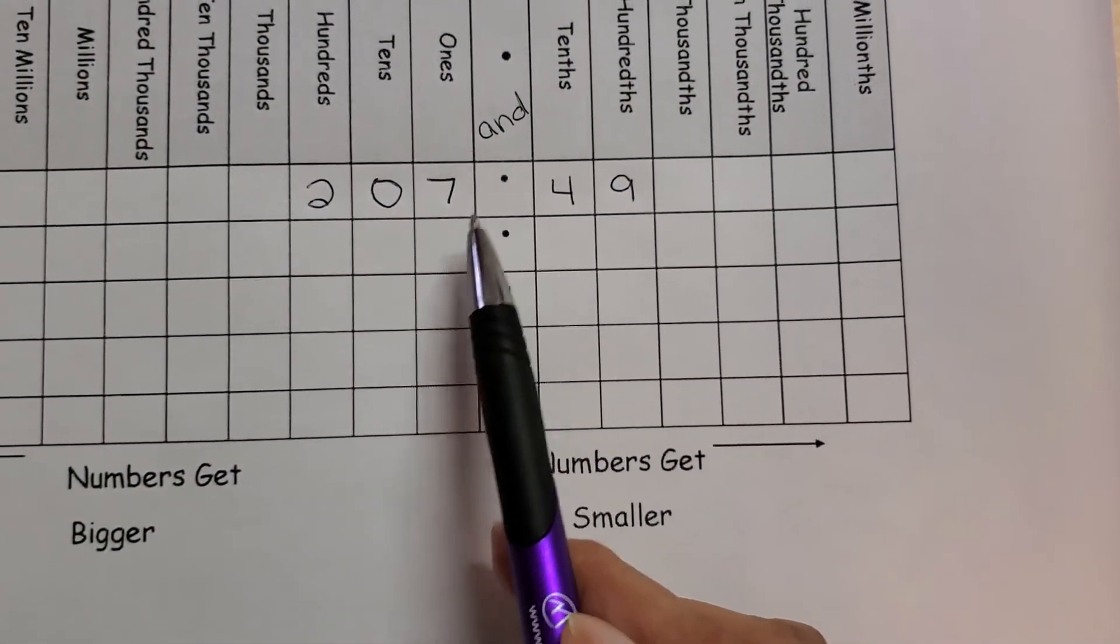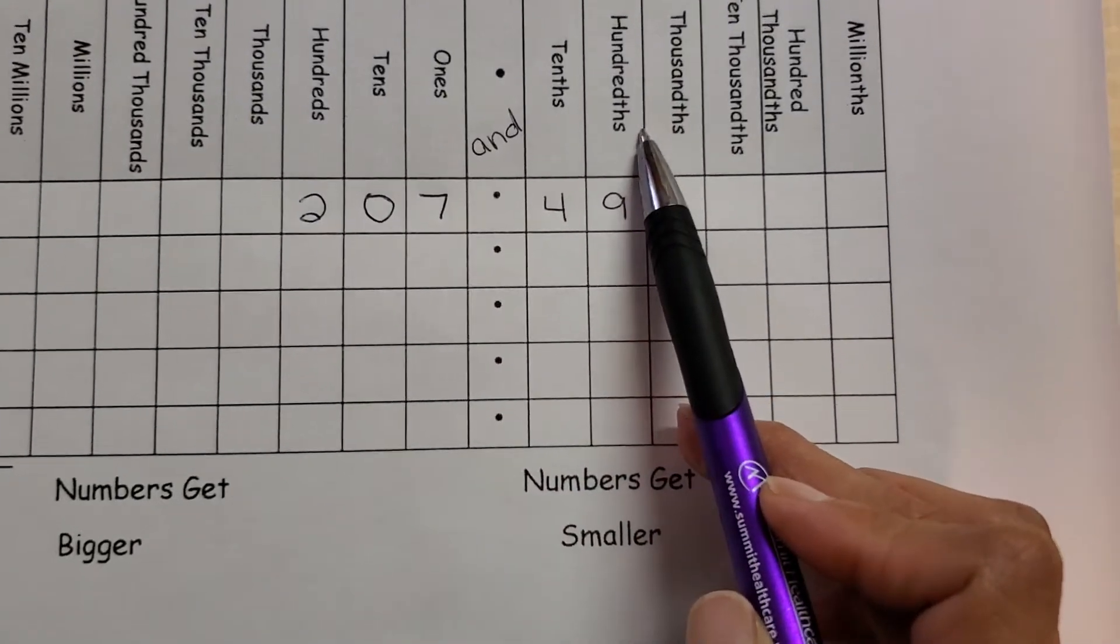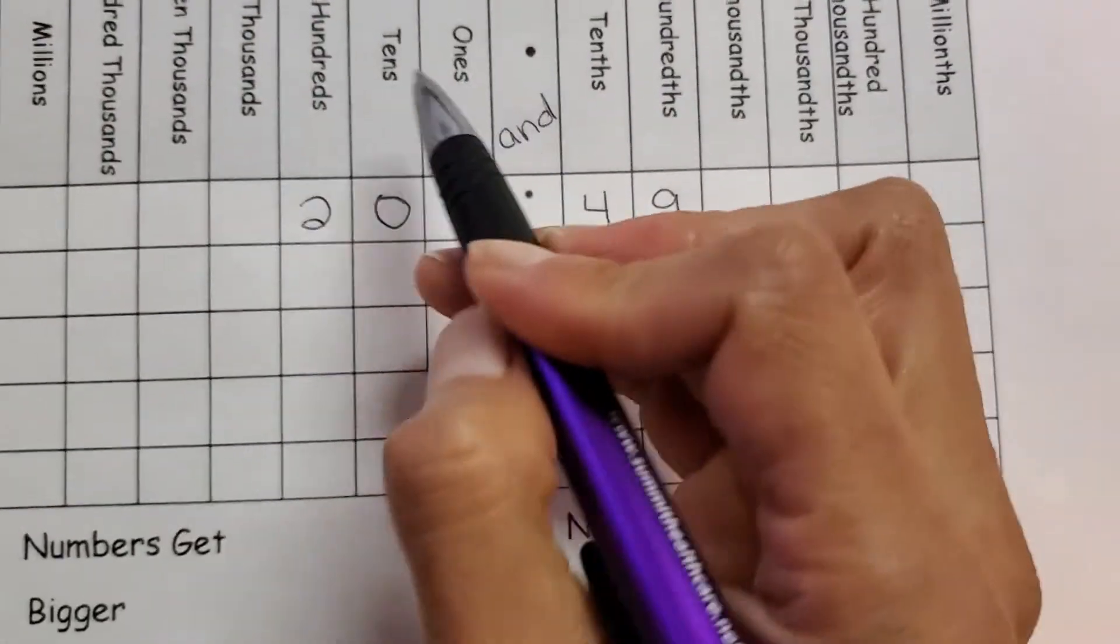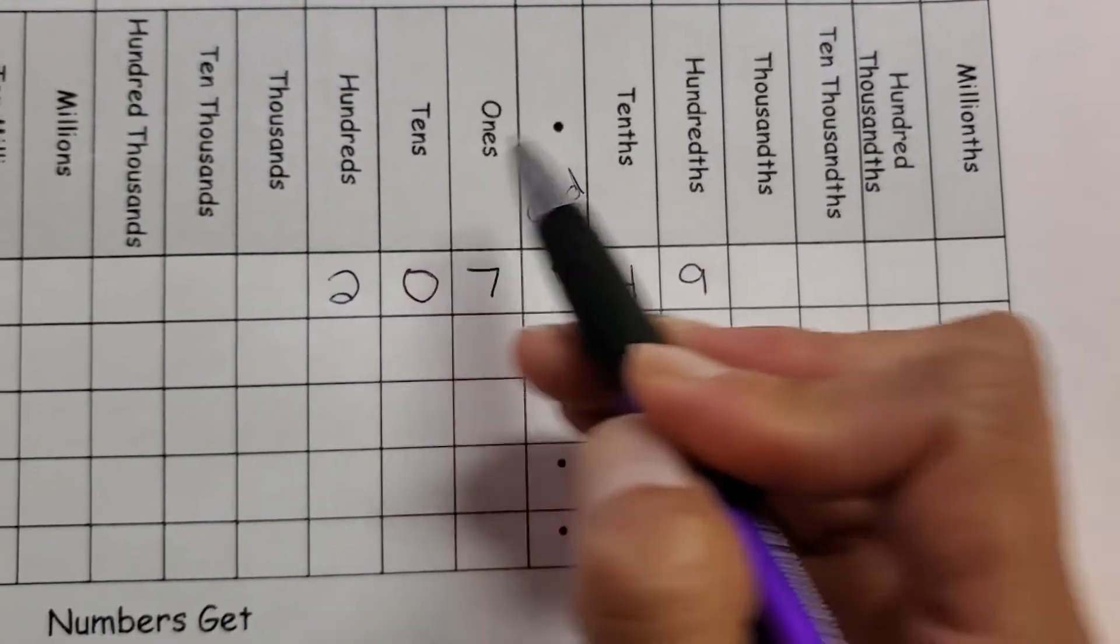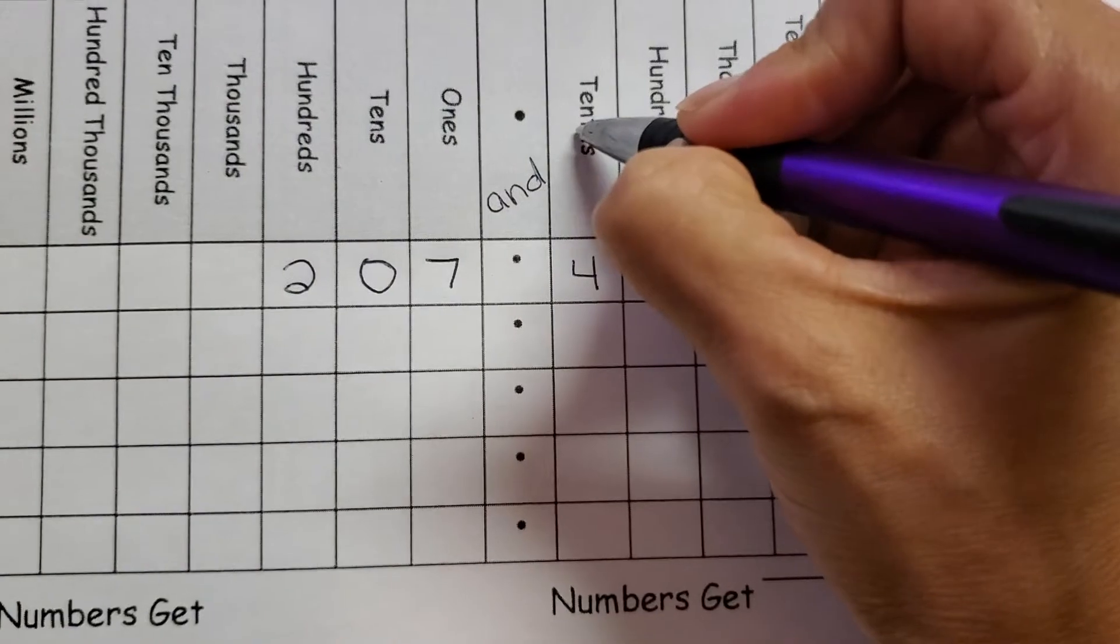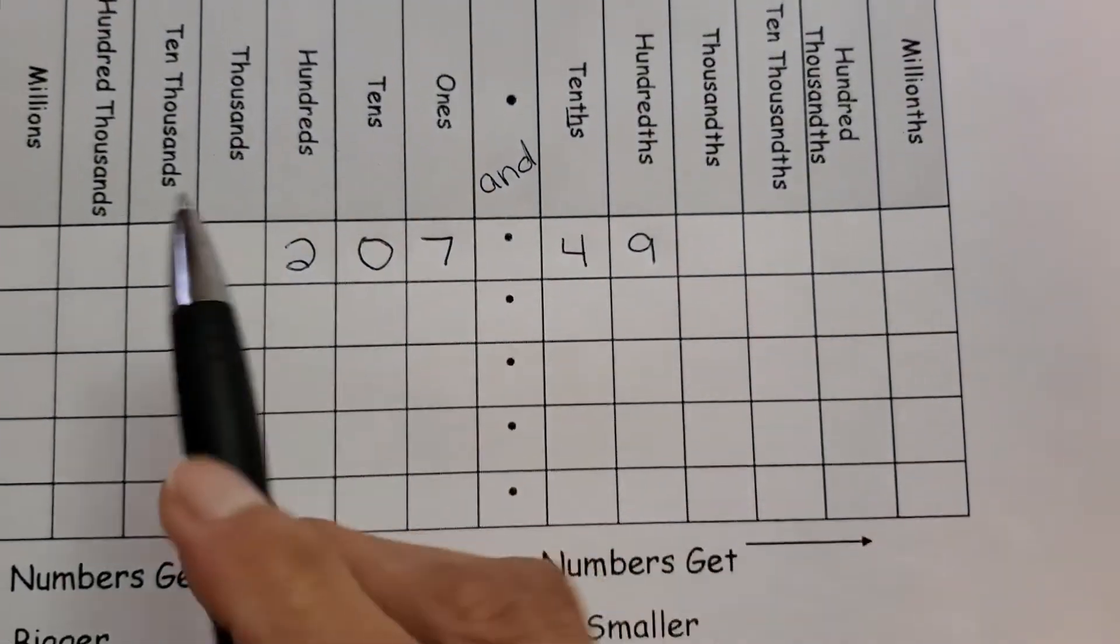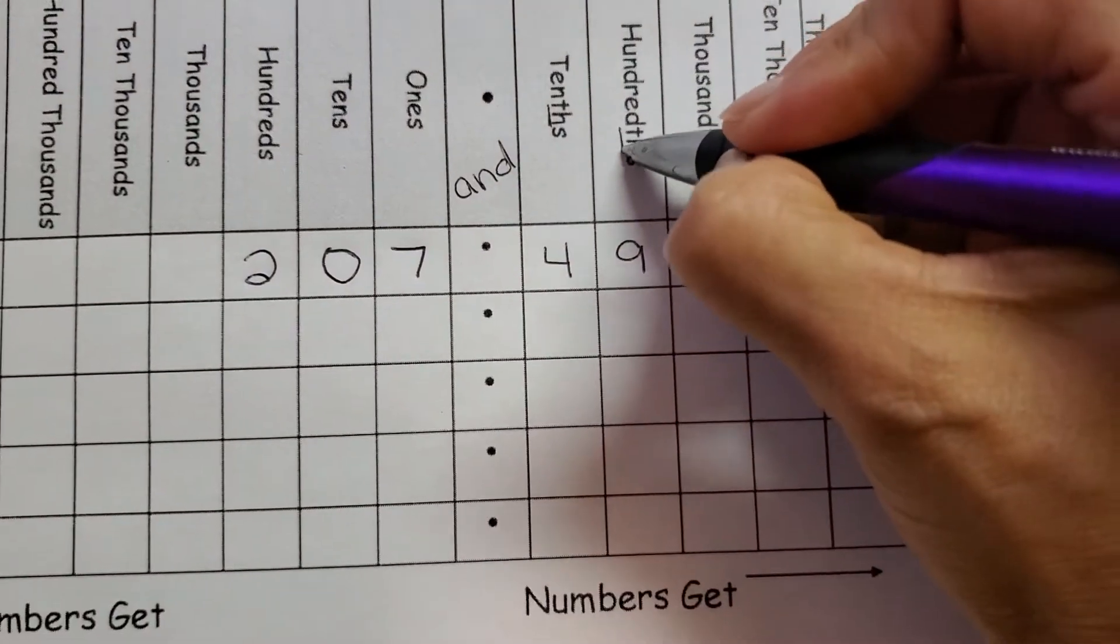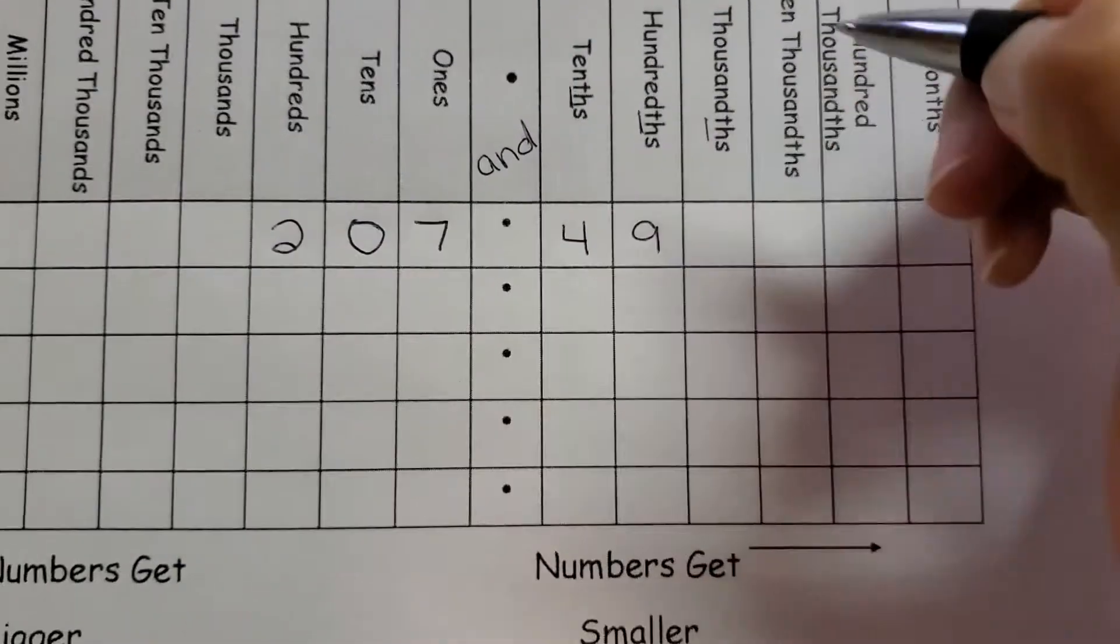Two hundred seven and forty nine hundredths. And over here, it's very important. This side is tens. This side is tenths with th. This side is hundreds. This side is hundredths. And it continues on.